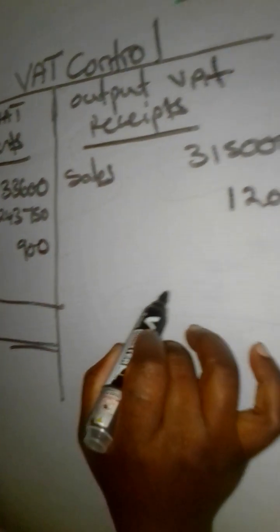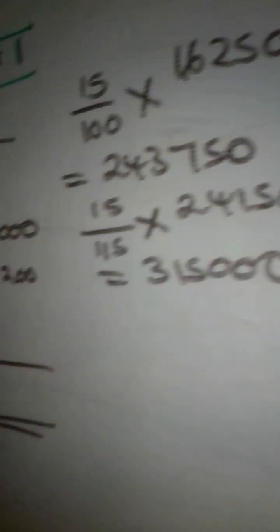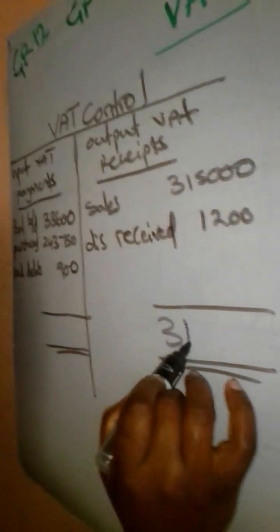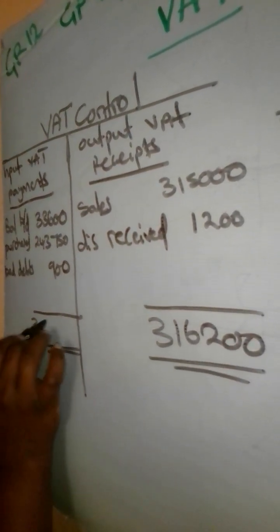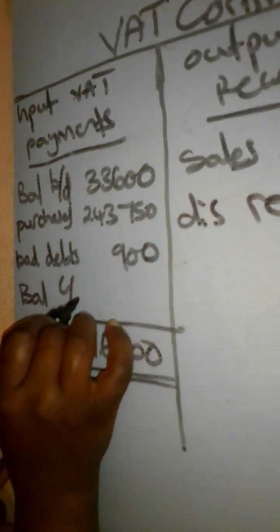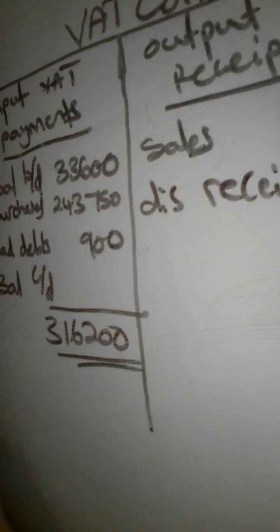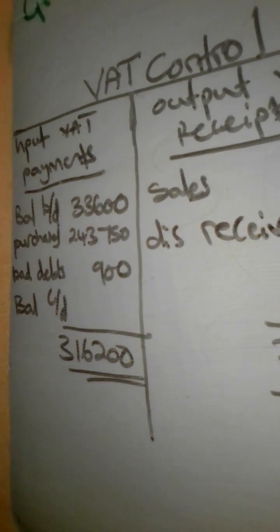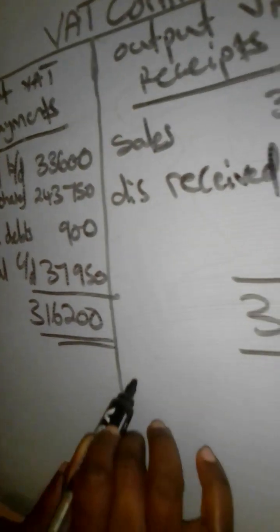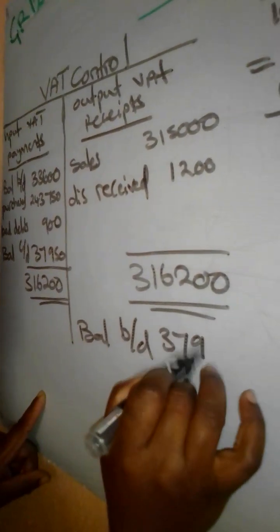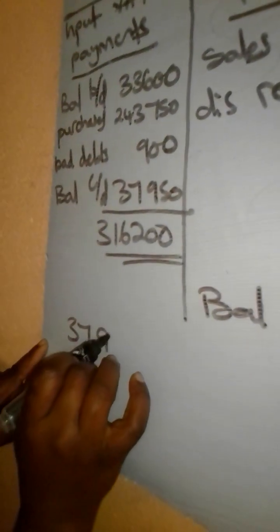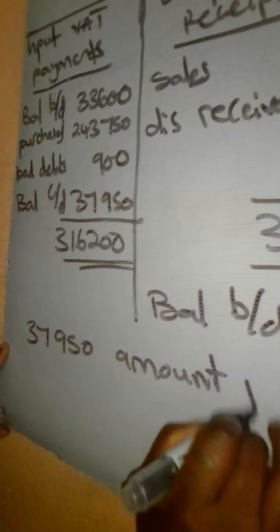Now we balance the account. The credit side is bigger. When we add 315,000 plus 1,200 we get 316,200. We subtract everything on the debit side and we remain with a balance carried down of 37,950. The balance brought down of 37,950 appears on the credit side, which means 37,950 is the amount payable to SARS.